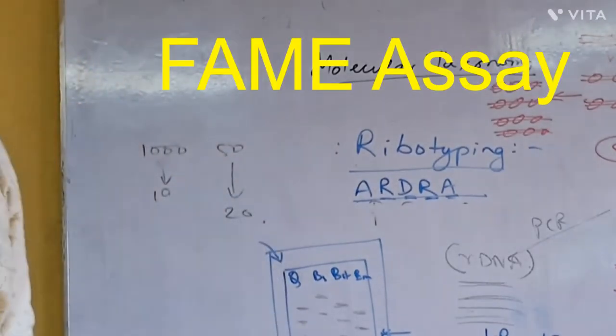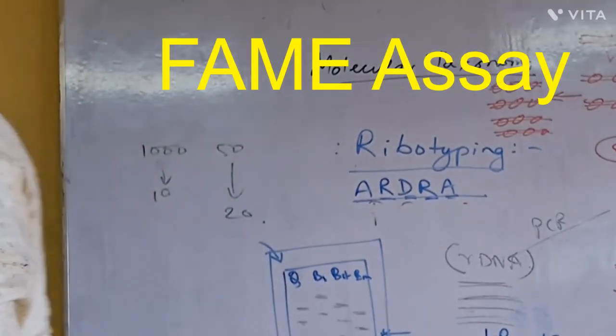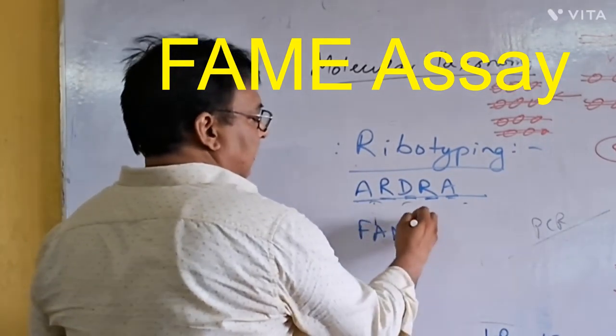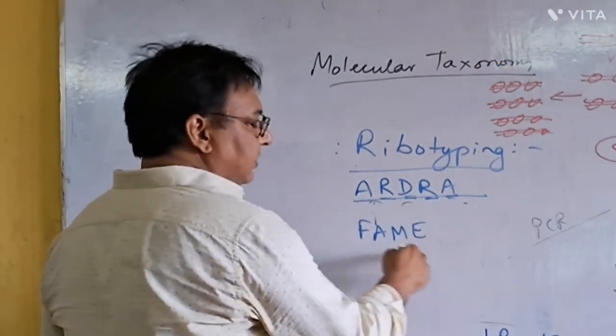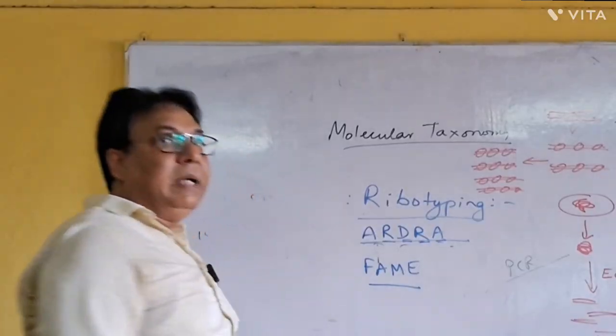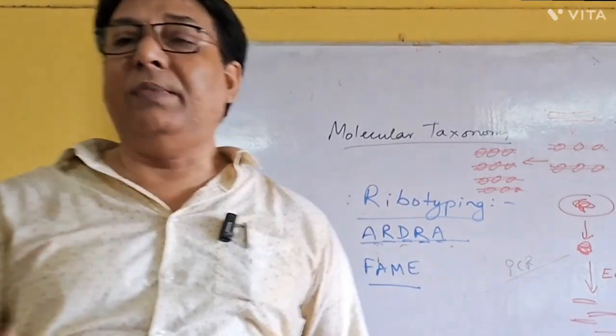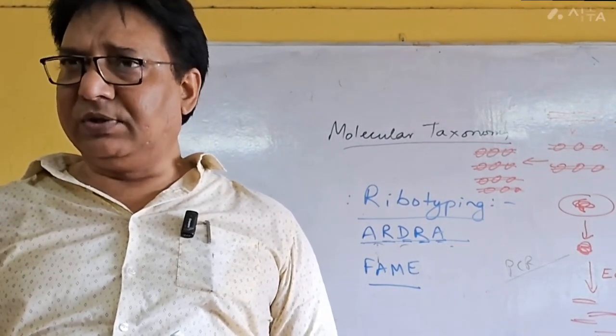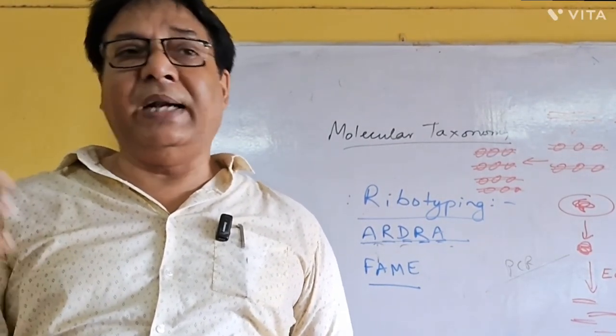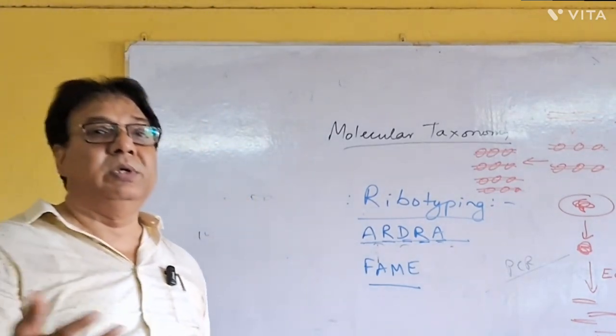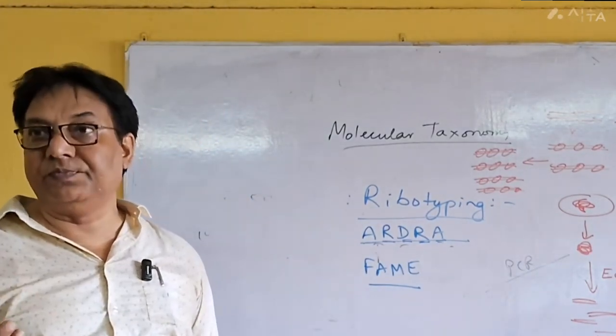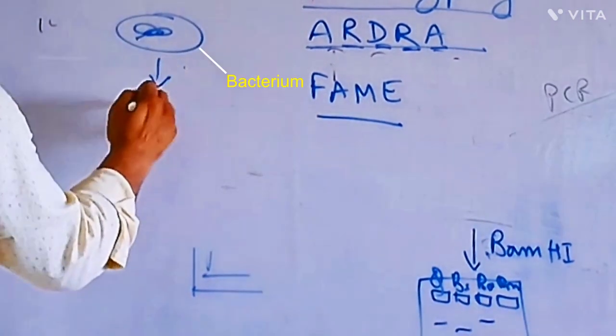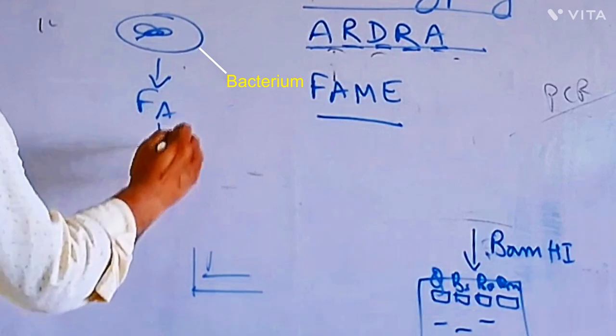Same technique, fatty acid methyl ester. Okay, what is done in that case? Fatty acid methyl ester. Here you have to extract the fatty acid from the bacteria, the whole fatty acid extraction, and then the fatty acids have to be converted to their methyl derivatives. First you isolate the fatty acid of a bacterium.